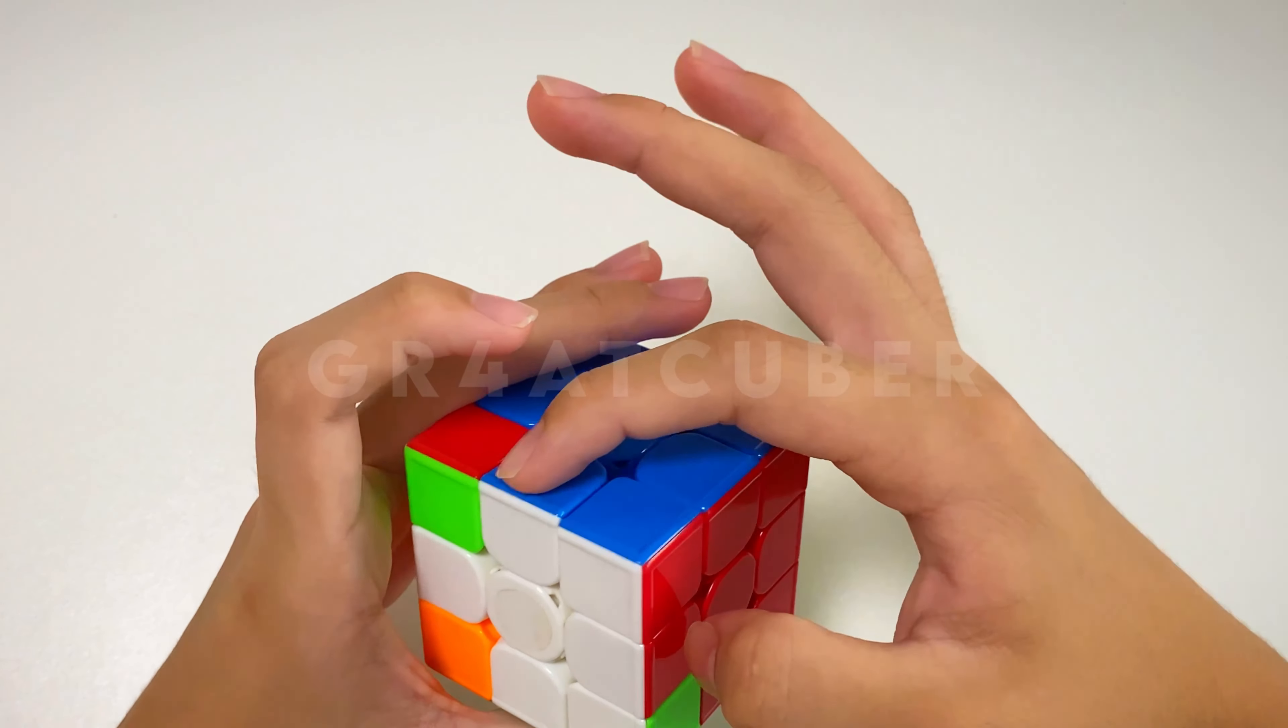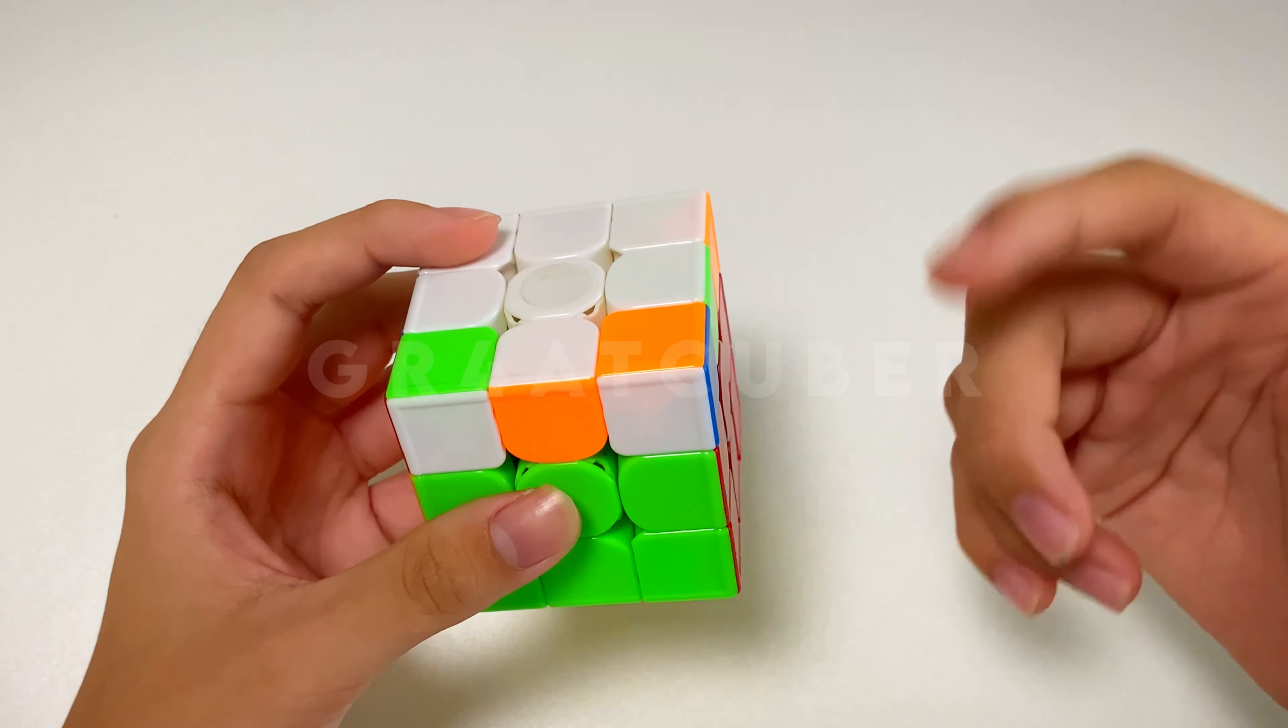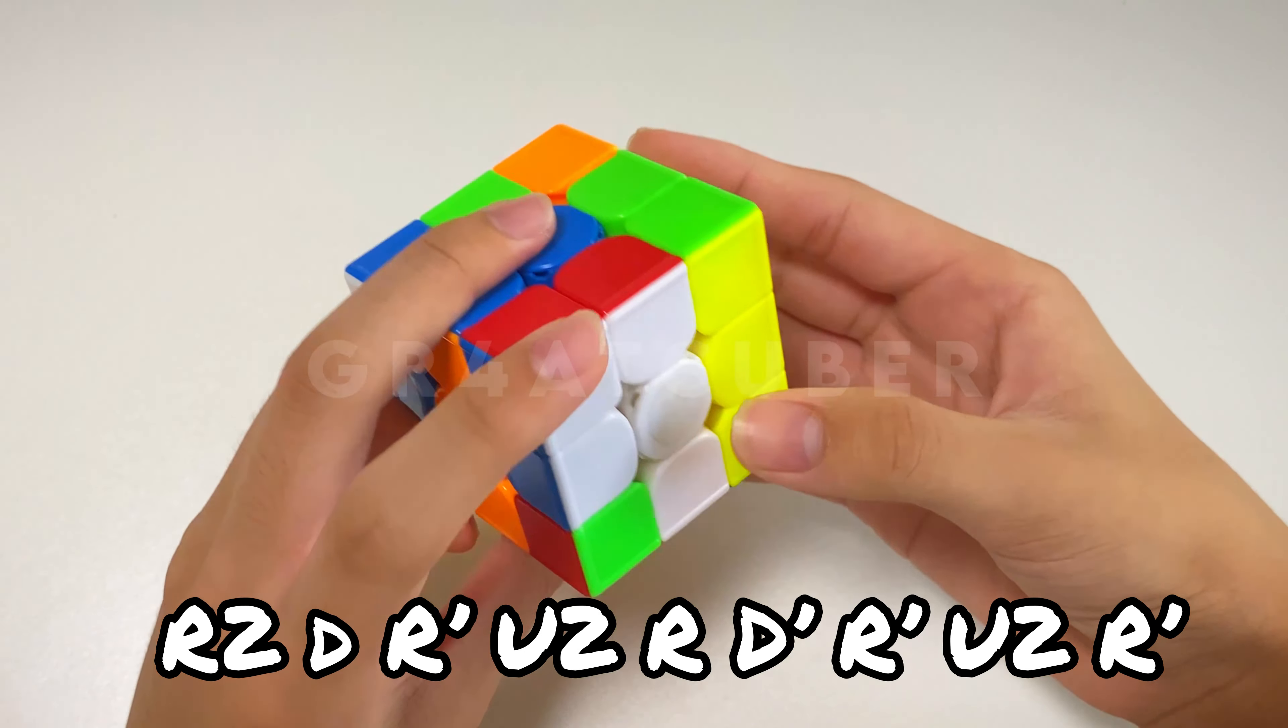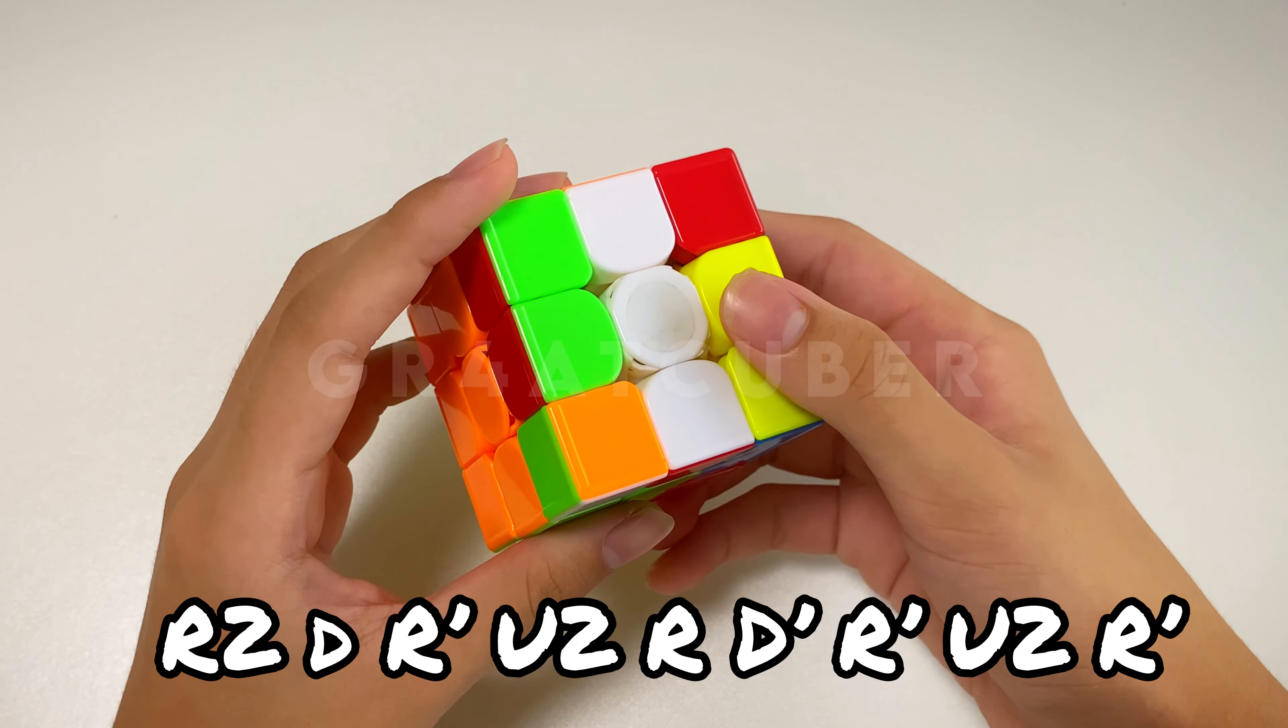Right, I noticed that there's these two that are solved already. And by this case I know that I'm gonna get a PLL skip. So I just did the original case - this is an OLL case. If you haven't learned it, then just check out websites like JPerm or some others.